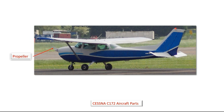The first one we're going to look at is the propeller, which is at the front of the aircraft. The propeller spins around and acts like a wing, producing lift, but the lift goes in a forward direction — we call that thrust. So it's attached to the engine, spins around, and produces thrust.